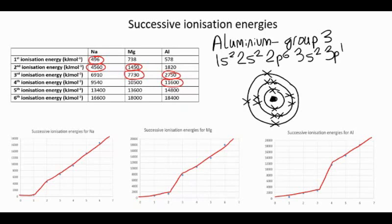So it takes a little bit of energy to remove the first electron, a bit more to remove the second — removing it from an aluminium plus ion — a bit more to remove the third. And then we get the big jump from the third to the fourth because we then have to remove an electron from a shell closer to the nucleus and a full, stable shell.